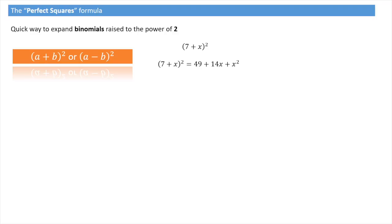Similarly, we'll also know how to show that 3y minus 5 raised to the power of 2 is the same thing as 9y squared minus 30y plus 25. Now of course we could do this just by distributing the two parentheses, but the perfect squares formula provide us with a much faster way of doing it.